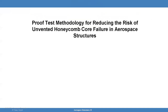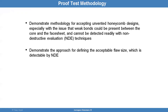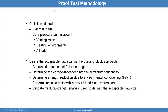Now let me talk about an approach for applying proof test methodology for reducing the risk of unvented honeycomb core failure in aerospace structures. I'll be demonstrating a methodology for acceptance of unvented honeycomb designs, especially when you have weak bonds present between the core and fascia that you cannot easily detect with ultrasound, thermography, or other methods. Part of the reason is because they're just weak bonds — not completely broken bonds.